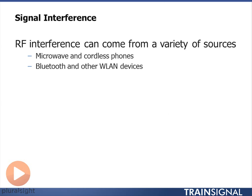One of the challenging things is that interference comes from a lot of different sources. When I put on my microwave oven I could get some interference; when people start using a cordless phone it could create interference; when they're using their Bluetooth device with their cell phone it could create interference; or if my neighbor transmits on the wireless LAN it could cause interference.